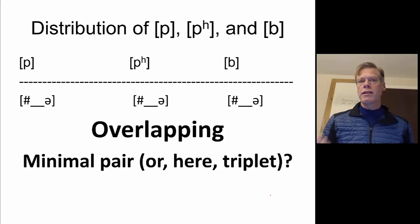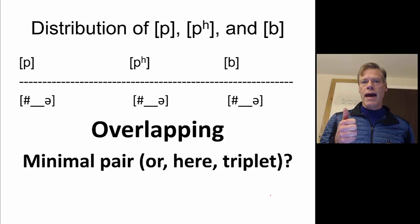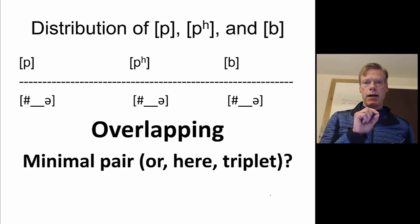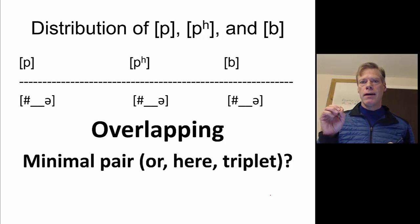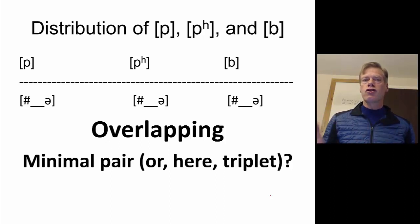When we see that it's overlapping, the next thing we want to look for is a minimal pair — or in this case, actually, a minimal triplet. A minimal pair is two different words that differ only in one sound. So what we're looking for is a set of three words where the only difference is that one has a P, one has an aspirated P, and one has a B. In order for it to be a minimal triplet, they each have to mean different things — meaning is relevant here, because that means it's contrastive.